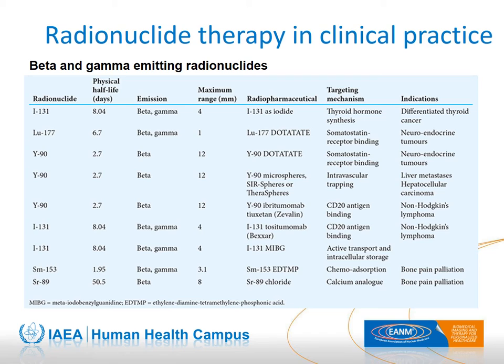The most commonly used radionuclides for treatment in clinical practice are radioiodine, lutetium-177, yttrium-90, and bone-seeking agents. All of these are used because of their beta emission. Some also demonstrate gamma or photon emission, giving the opportunity to perform post-treatment imaging. Depending on the indication, they are either applied in a labelled or unlabelled form.